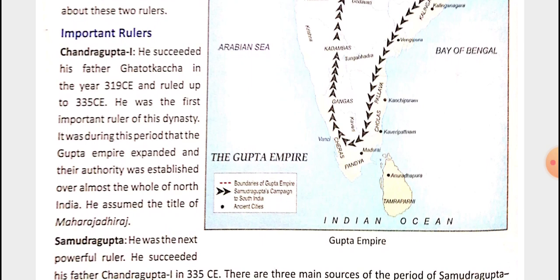Chandragupta I succeeded his father Ghatokacha in the year 319 CE and ruled up to 335 CE. He was the first important ruler of this dynasty. It was during this period that the Gupta Empire expanded and their authority was established over almost the whole of North India. He assumed the title of Maharajadhiraja.